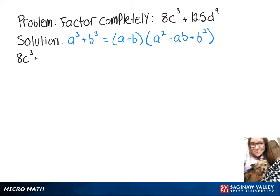We're going to start by rewriting 8c cubed plus 125d to the 9th as 2c quantity cubed plus 5d to the 3rd quantity cubed.